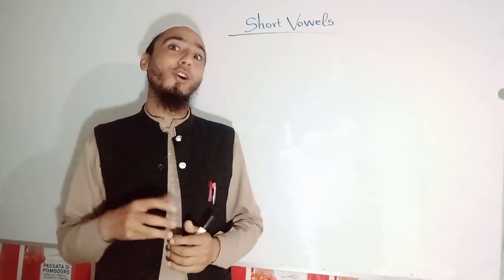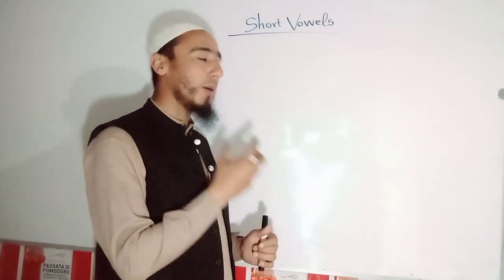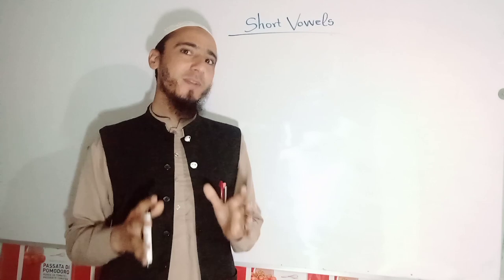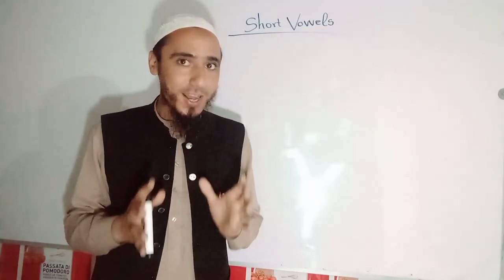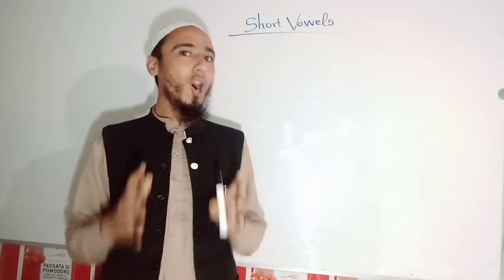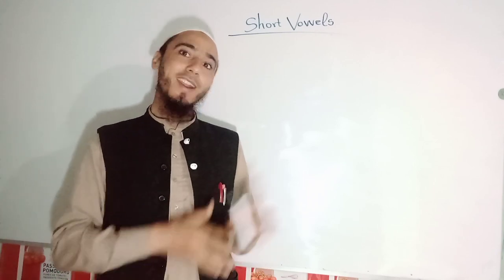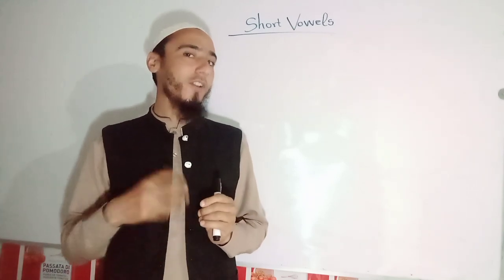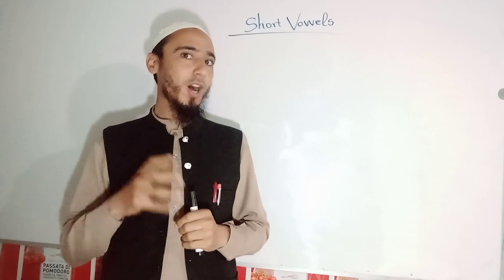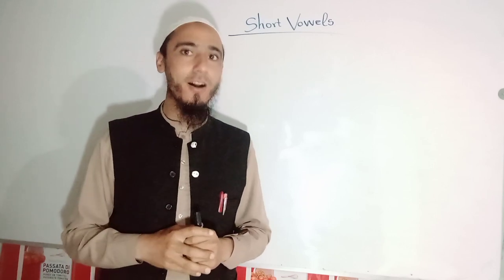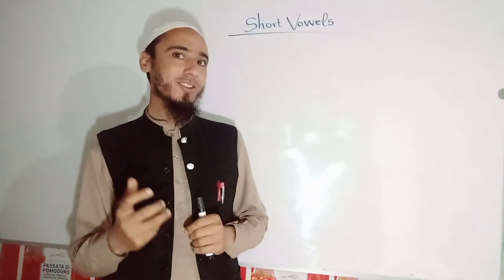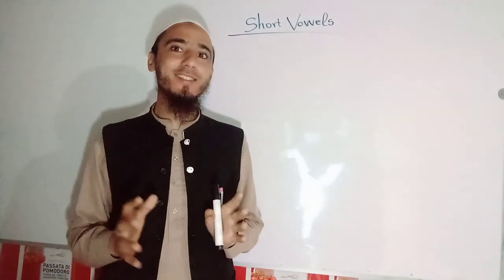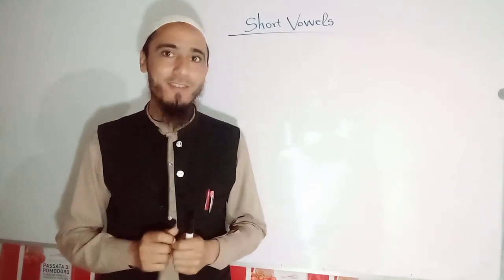I think a little background knowledge is required about English sounds before we discuss short vowels — how many vowels are there in English and how many consonant sounds are there. According to BBC, there are 44 English sounds. Out of these 44 sounds, 20 are vowel sounds and the rest — 24 — are consonant sounds.